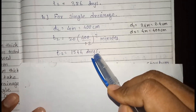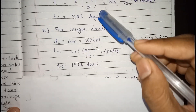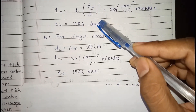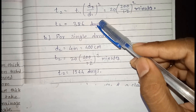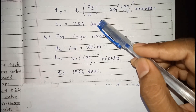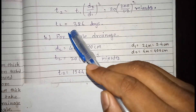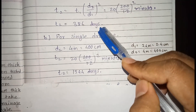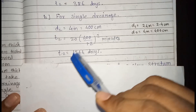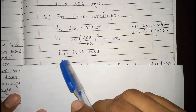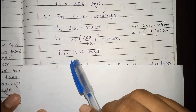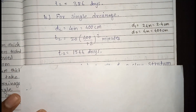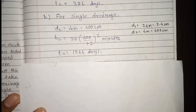Calculating T2 for single drainage gives 1544 days. Comparing the two: with double drainage, the time for 50% consolidation is 386 days; with single drainage, the time required is 1544 days.